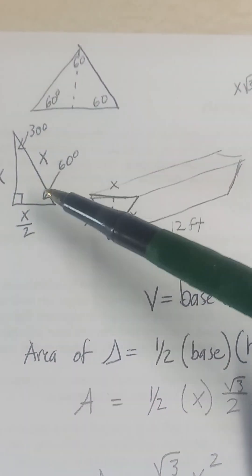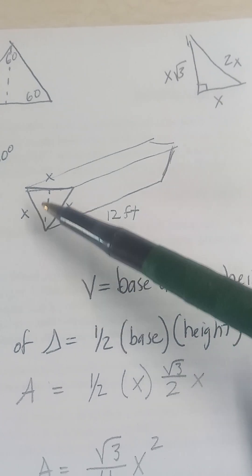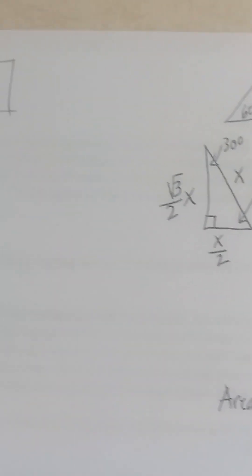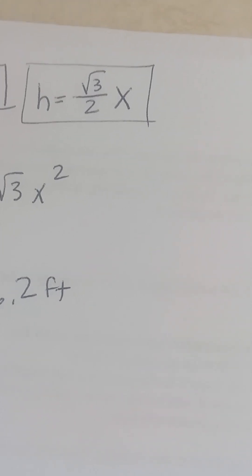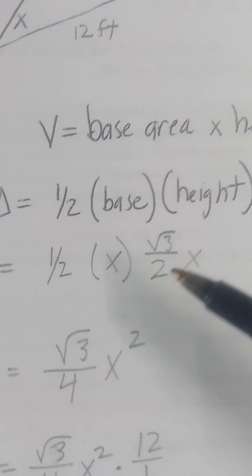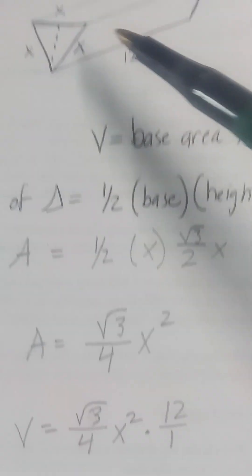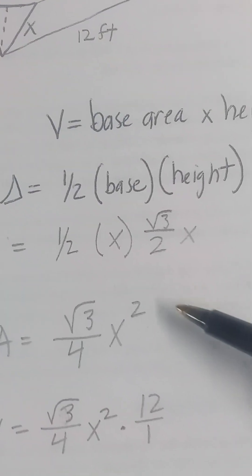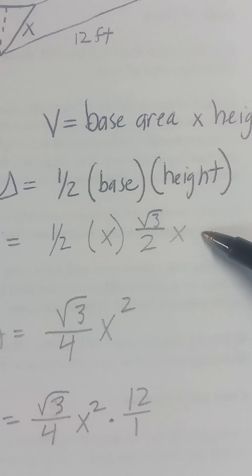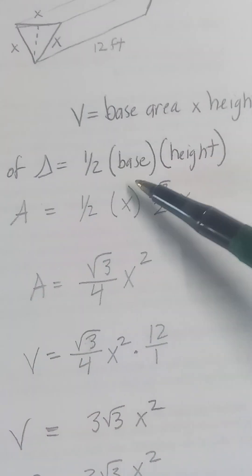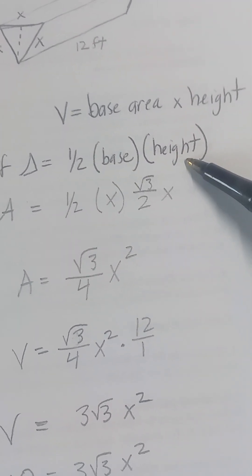The area of a triangle is 1 half times base times height. So our triangle is 1 half times the base X and the height—remember the height was root 3 over 2. So I got 1 half times X times root 3 over 2.